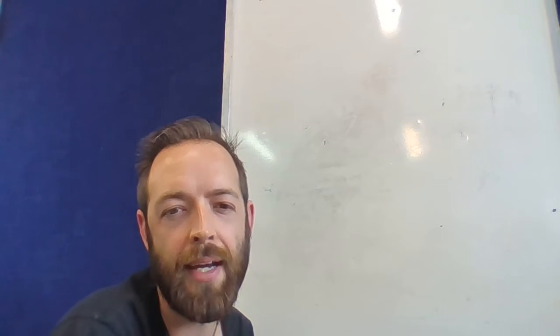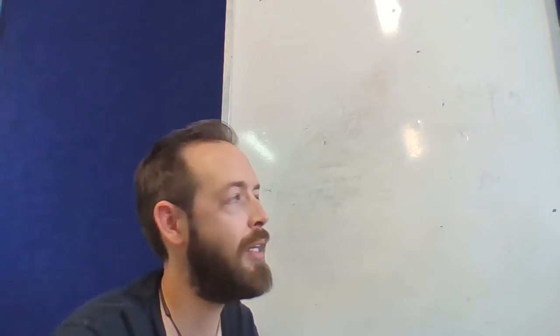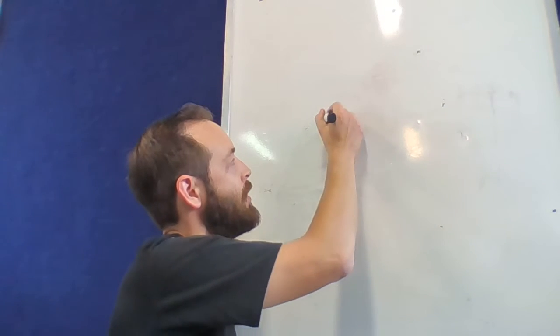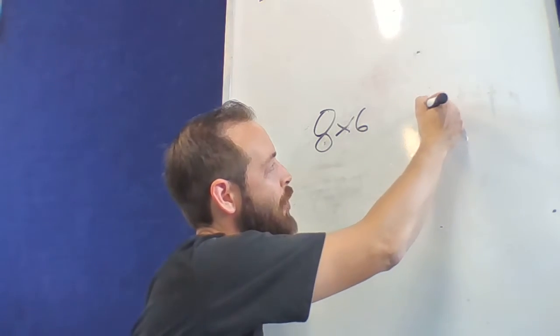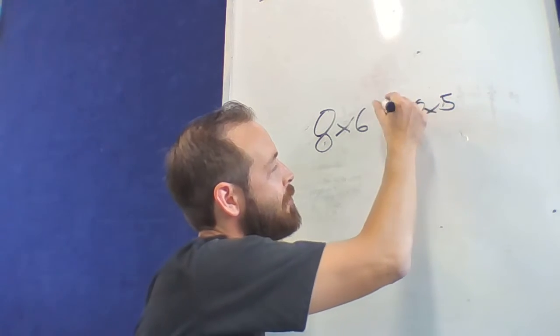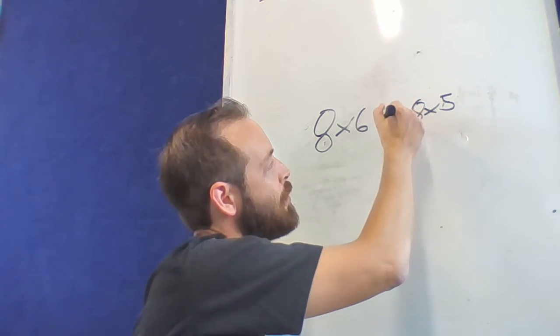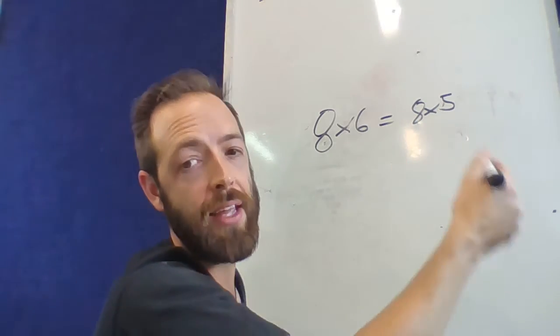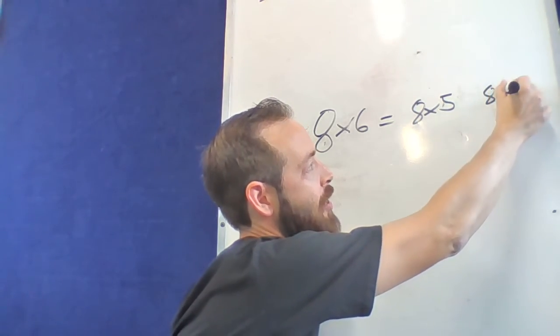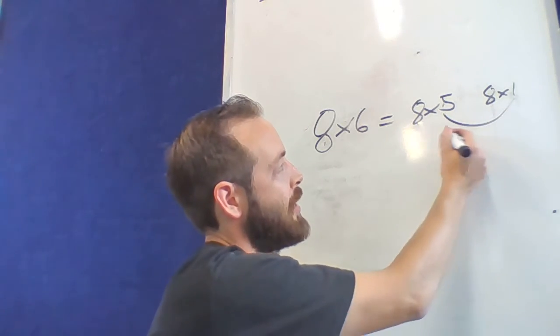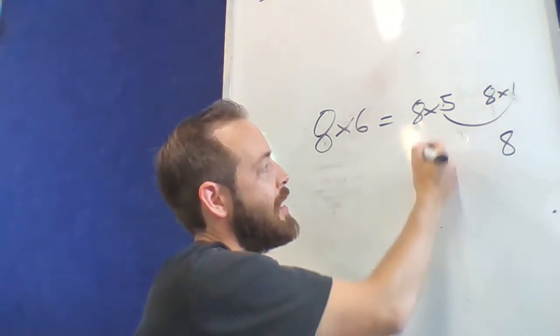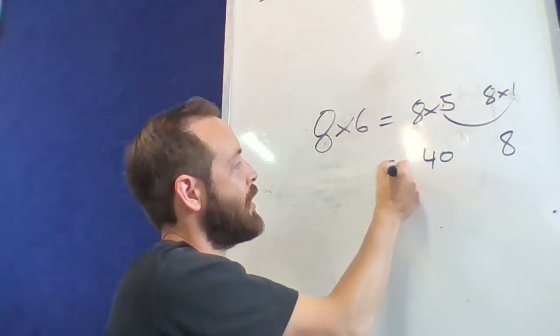This video is about solving multiplication by adding on — it's a strategy for when you don't know all your times tables and come across one you're unfamiliar with. For example, you may not know 8 times 6, but you can figure it out by working out 8 times 5 and then adding on another one — in this case, another 8 times 1. Altogether you have 6 lots of 8.